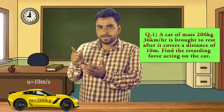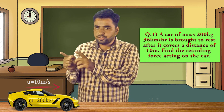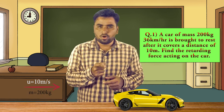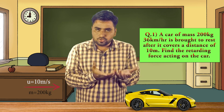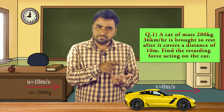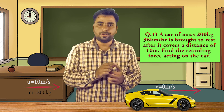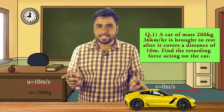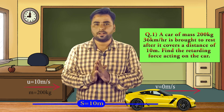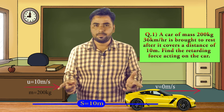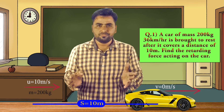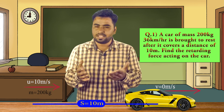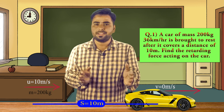Okay, 10 meters per second is the initial velocity u. And now the final speed is 0, so v = final velocity = 0 meters per second. The displacement s is 10 meters. We need to find the retarding force.